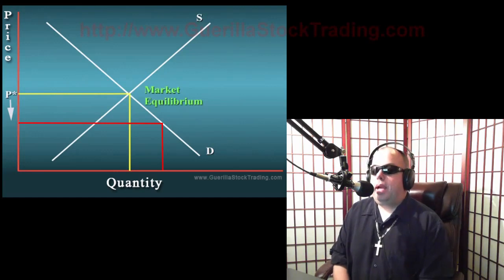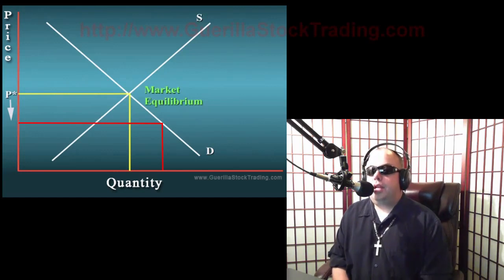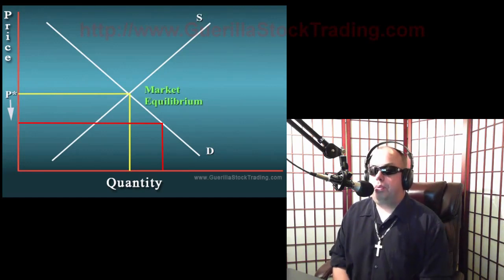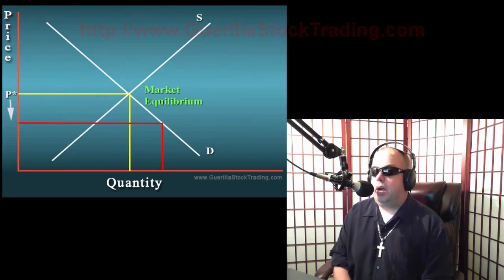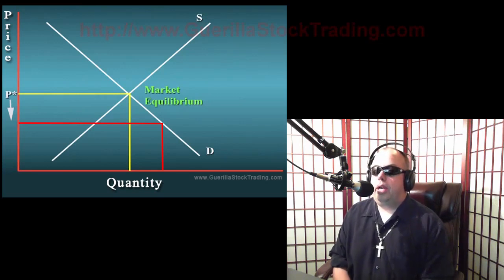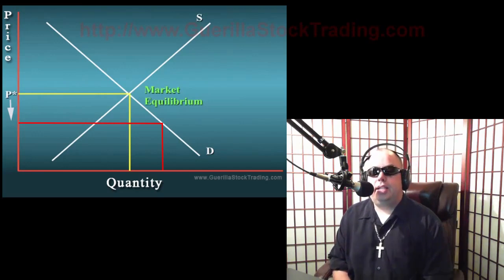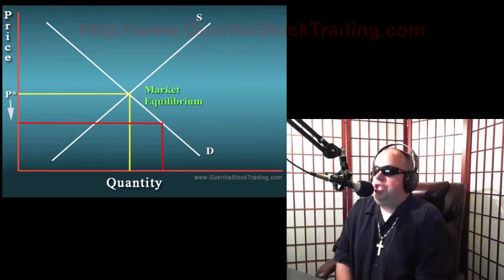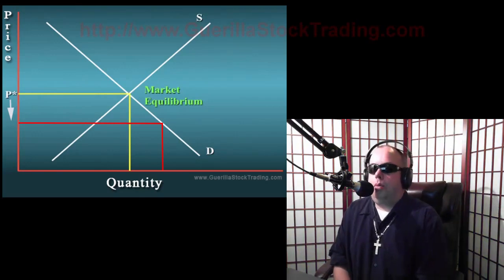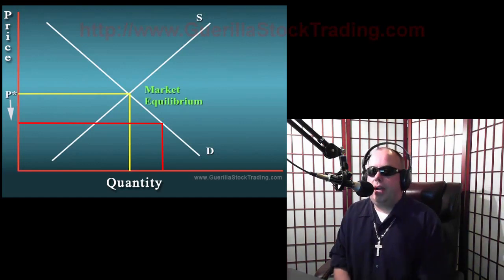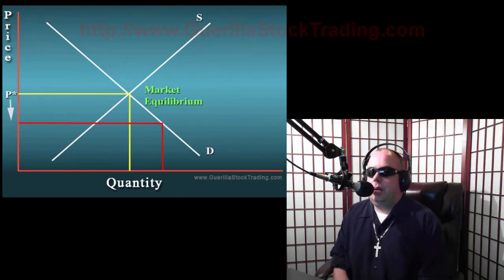Demand is almost an intuitive concept — everybody understands that when price goes up, demand goes down; when price goes down, demand goes up. Because something's cheaper, people buy more of it. When something goes on sale, people buy more of it. Everybody pretty much understands that concept.